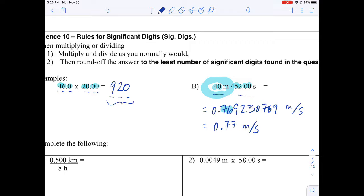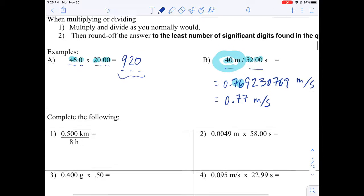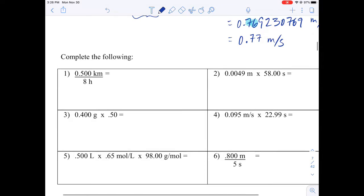So, if you want to pause the video here you can. I'm going to just quickly run through these calculations, so if you pause it and then want to check you can. Okay, so for the first one we've got 0.5 divided by 8, so my calculator is giving me 0.0625 and this will be kilometers per hour.